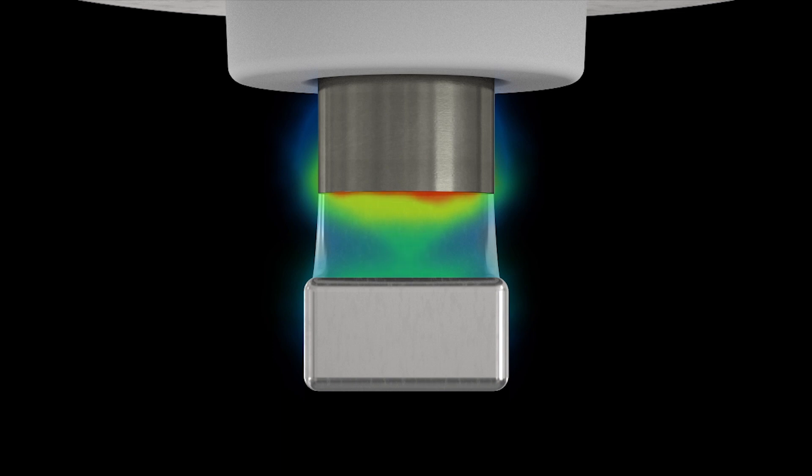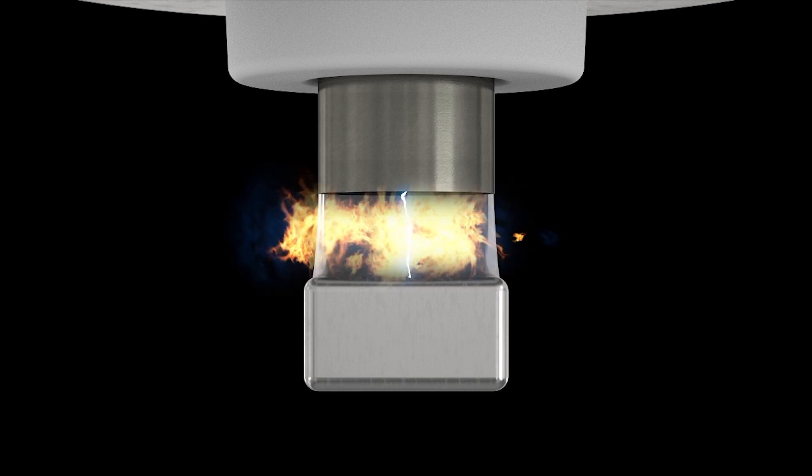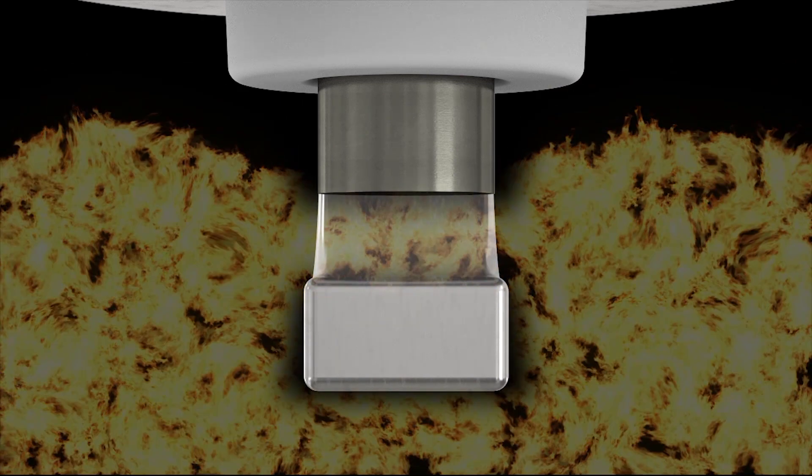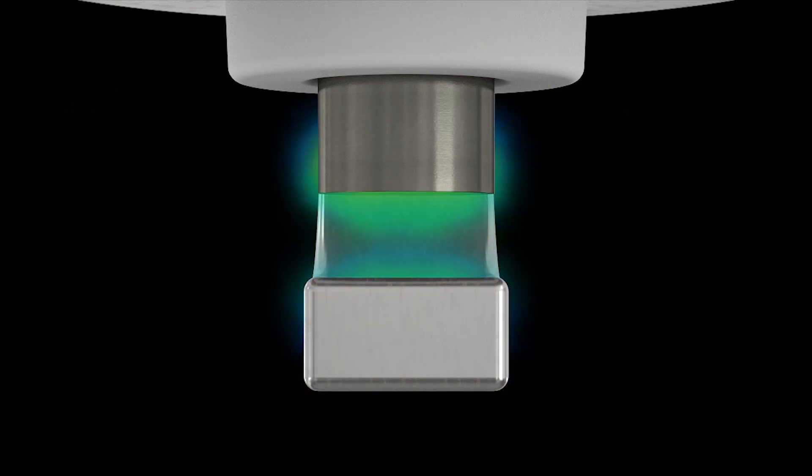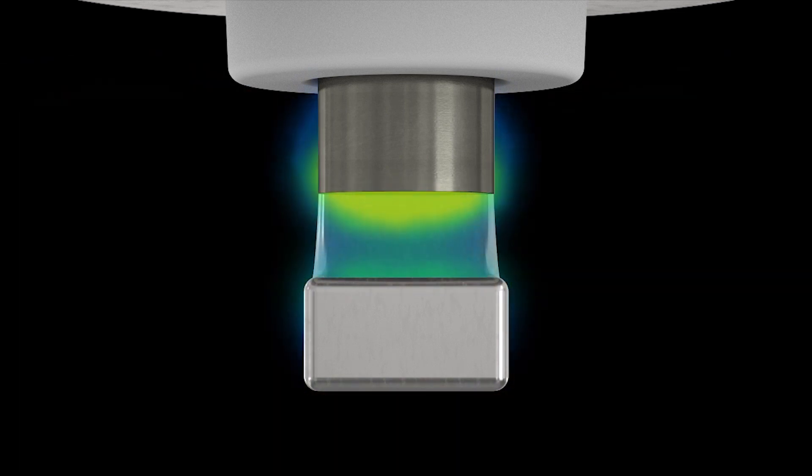This then allows the high voltage to create a spark across the gap between the two spark plug electrodes. The spark's high temperature then ignites the air-fuel mixture. A flame is created between the electrodes, and the growing flame progressively, but rapidly, ignites the air-fuel mixture in the combustion chamber.